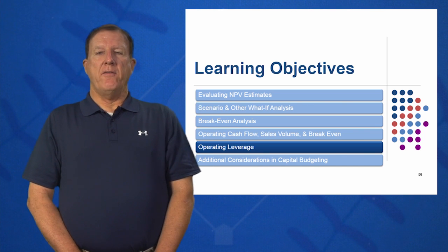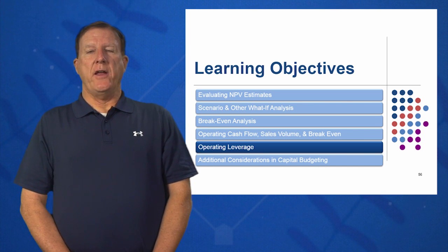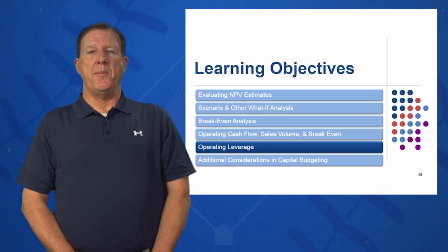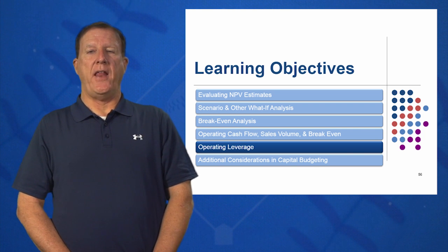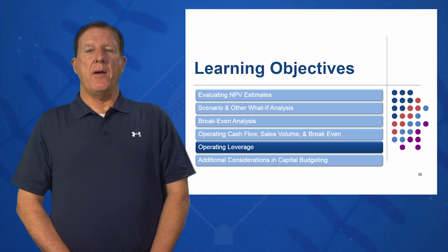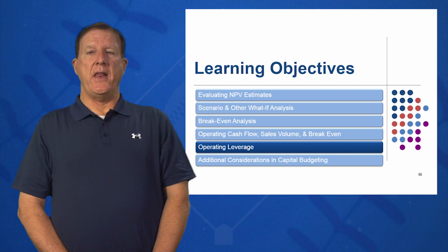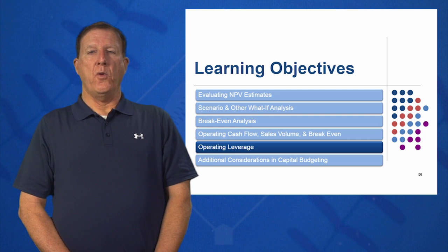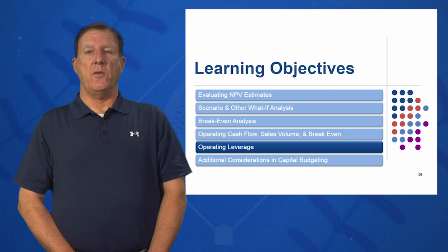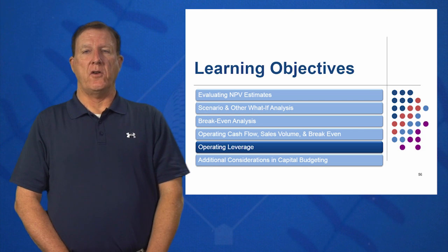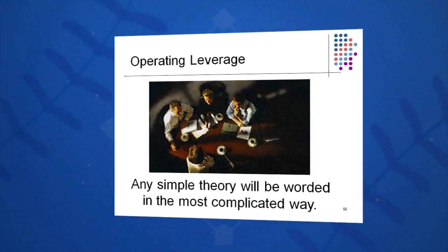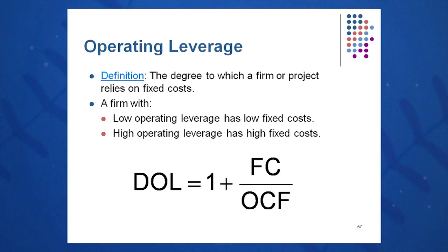Our fifth learning objective looks at degree of operating leverage. Here we'll assess the company and how capital intensive it is. If it has a high amount of capital intensity, we will have high operating costs, whereas a small increase in sales will result in a large increase in OCF. Degree of operating leverage is the degree to which a firm or project relies on its fixed costs.